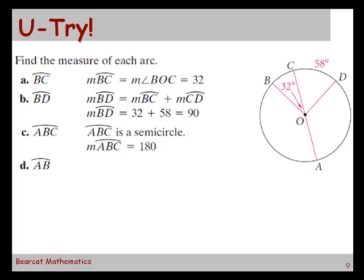And then finally the measure of arc AB. How'd you get that? If we just take 180 minus 32 we're going to get 148. Does that seem pretty straightforward? Yeah. Seems easier than what we've been doing the last couple of days.